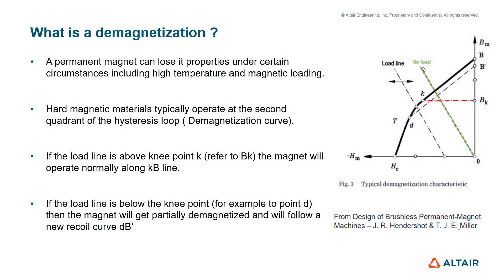In this slide, we give some notions about the demagnetization effect. Among the risks of permanent magnet machines is the demagnetization of the magnets under certain working conditions — for example, temperature or a magnetic field. The adjacent curve shows the operating area of a permanent magnet. Generally, the magnetic material typically operates at the second quadrant of the hysteresis loop. From this curve, we can see that if the load line is above the knee point — take, for example, point K —